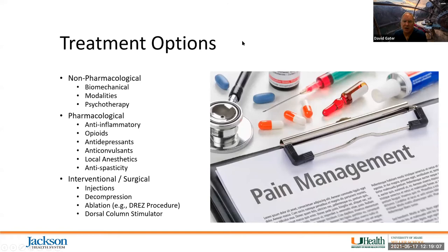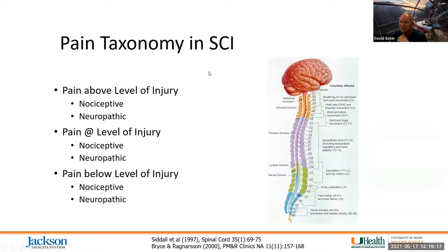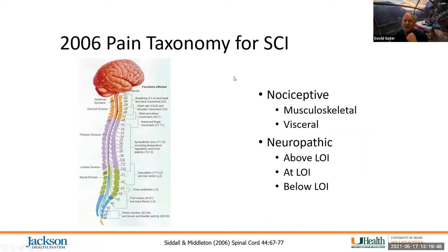Before we get to treatment options, I need to talk through the taxonomy for pain after spinal cord injury. Siddell et al. reported before the turn of the century, and Bryson-Ragnarsson reported a pain taxonomy describing pain above the level of the injury, at the level, and below the level — listing nociceptive and neuropathic pain for each. A few years later, this was modified to: nociceptive (musculoskeletal or visceral) or neuropathic (above, at, or below the level of the injury).